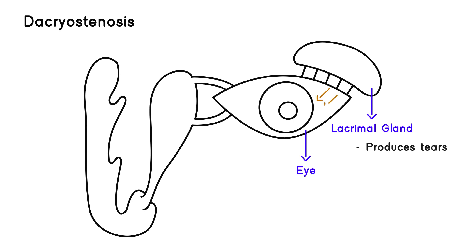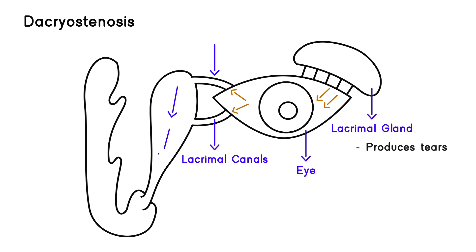The tears flow to the surface of the eye, and eventually they go into these little canals. Appropriately they're known as lacrimal canals. There are two of them, one here and one there. Then the tears flow down through this area, and this top area is known as the lacrimal sac.